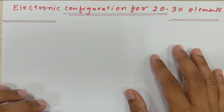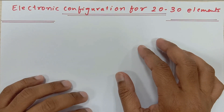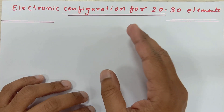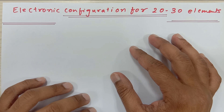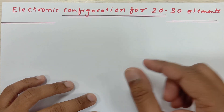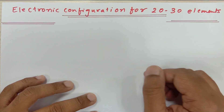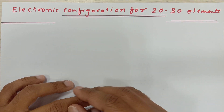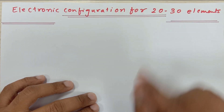Today I am going to teach you how to write down the electronic configuration for the elements between 20 to 30. As we have already seen in the previous video, how to write the electronic configuration — 2,8,1 or 2,8,2 or 2,7 — for elements 1 to 20. Now I am going to teach you for elements 20 to 30.